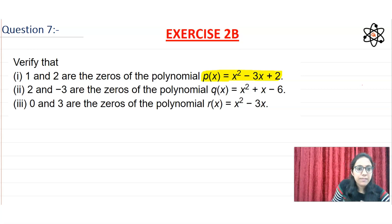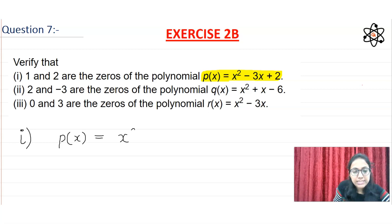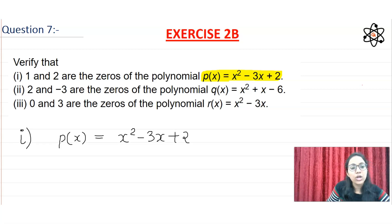Look, in the first part we have to verify this. What is your polynomial? P(x) = x² - 3x + 2. The answer is zeros — when we substitute a value and get the polynomial equal to 0, that value is a zero.